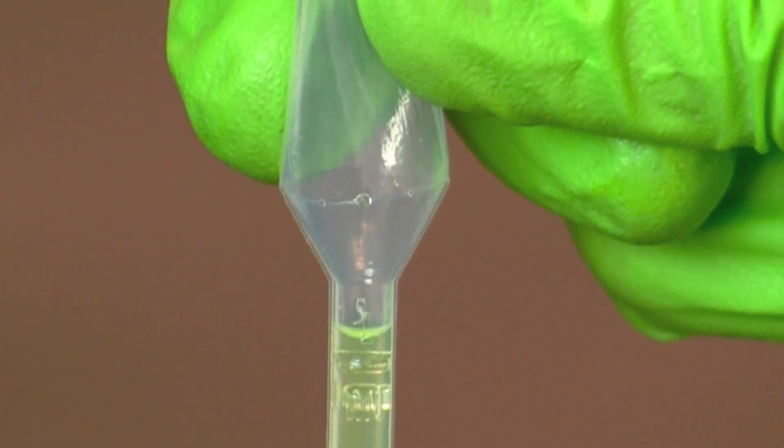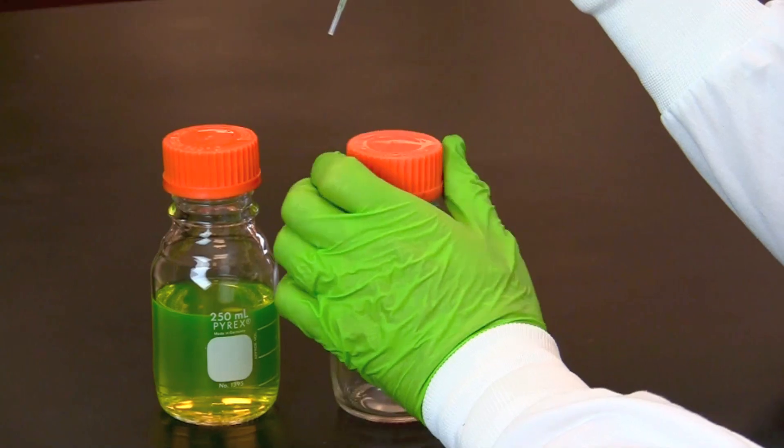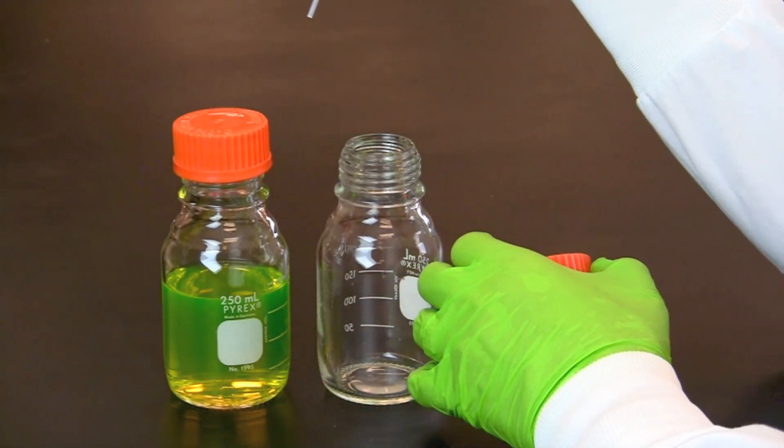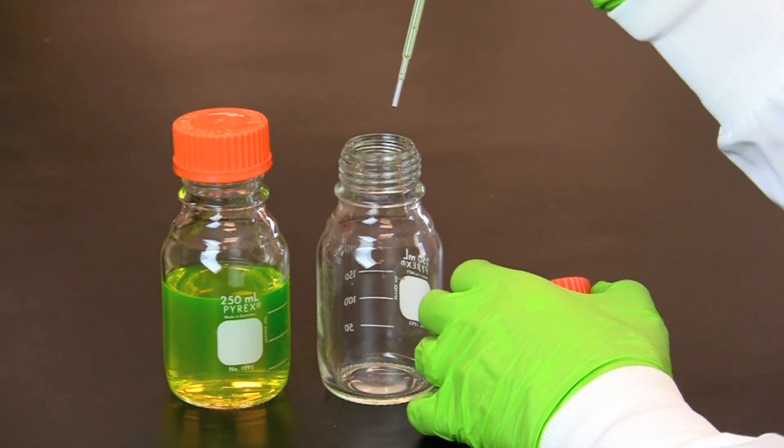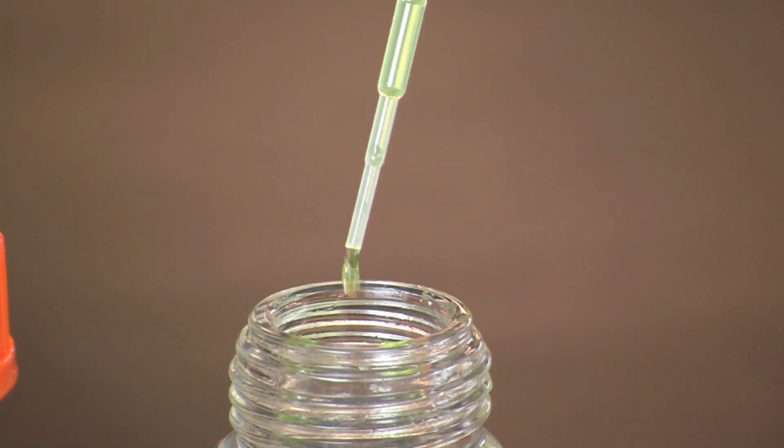Then slowly apply pressure on the bulb until the solution reaches the desired volume. Then holding steady pressure on the bulb, move the pipette to where you wish to transfer the solution and slowly apply pressure on the bulb to dispense the liquid.